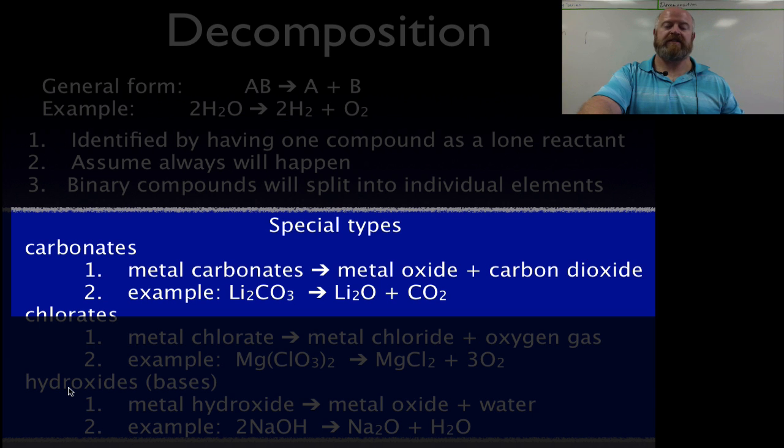For carbonates and chlorates and hydroxides, they always follow the exact same pattern when they break down. So if you have a metal carbonate, for example, like lithium carbonate, what happens is that metal carbonate breaks into a metal oxide and carbon dioxide gas. So basically what happens is this carbonate, as you start to decompose it, usually it means you're going to need to put heat energy in to do this. This carbonate breaks apart, the oxygen sticks around and attaches to the metal, and carbon dioxide gas is released from that.